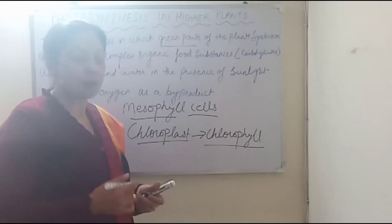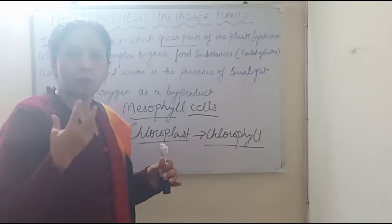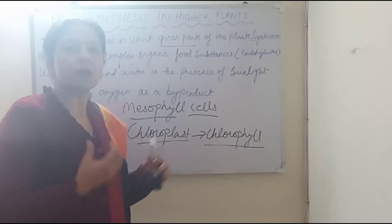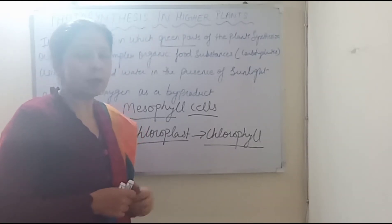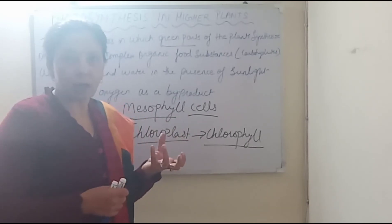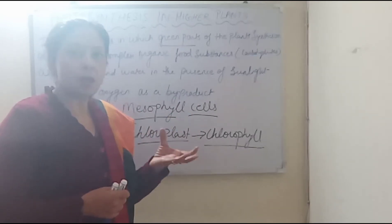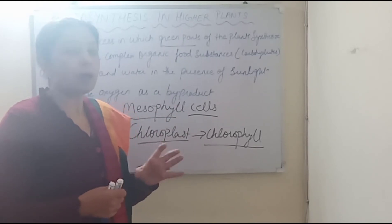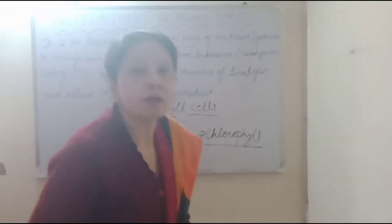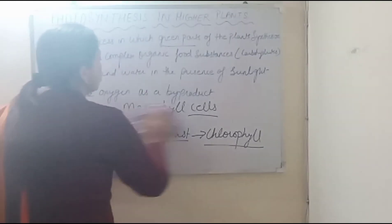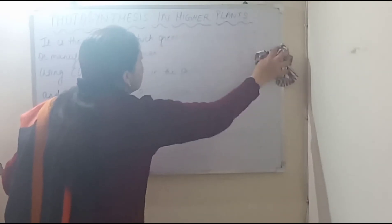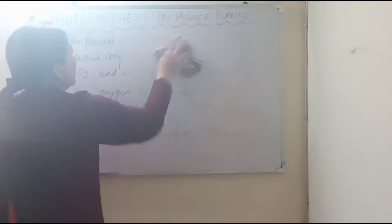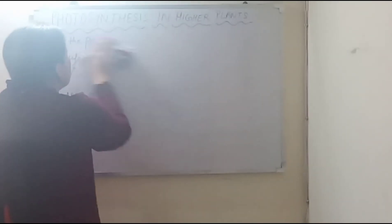Now we will see a little bit about the structure — we will see the structure of the chloroplast. Photosynthesis is not a simple process; it is completed in two parts. One is the light reaction and one is the dark reaction. We will look at where each reaction takes place, and after that we will study it in detail.